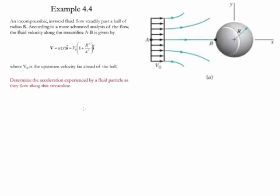Example 4.4: In this example, we have an incompressible, inviscid fluid flow which steadily passes a ball of radius R. According to a more advanced analysis of the flow, the fluid velocity from point A to point B along the streamline is given by this equation.